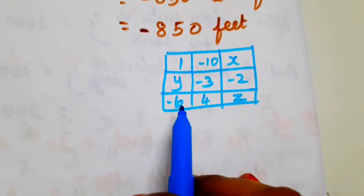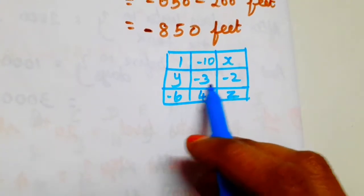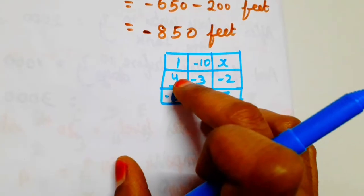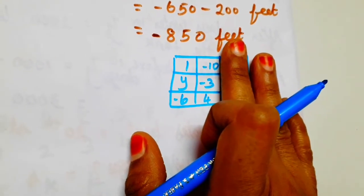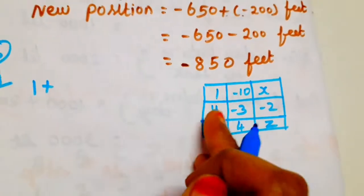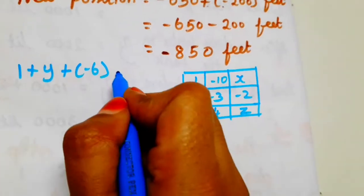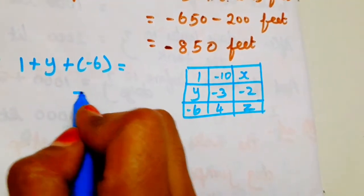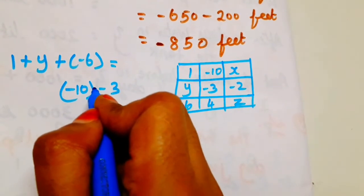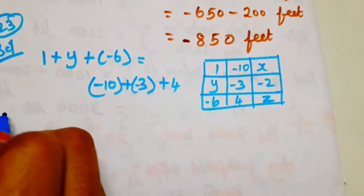Students, looking at the numbers in the square: 1, y, minus 6; then minus 10, minus 3, minus 4. Since y is the only unknown in that row, we can solve for y. So: 1 plus y plus minus 6 equals minus 10 minus 3 plus 4.